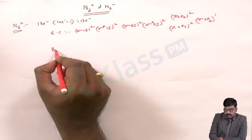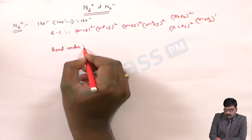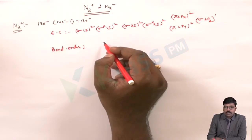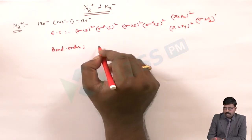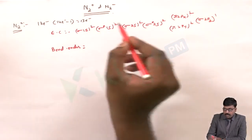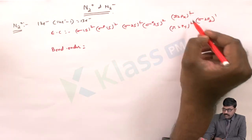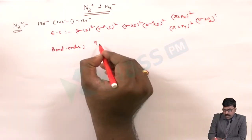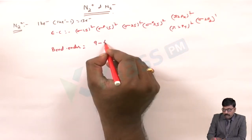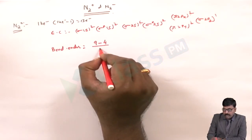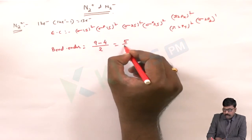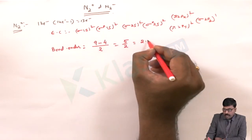The bond order is equal to the number of bonding electrons minus the number of antibonding electrons, divided by 2. There are 9 bonding electrons and 4 antibonding electrons, so the bond order is (9 minus 4) divided by 2, which equals 2.5.